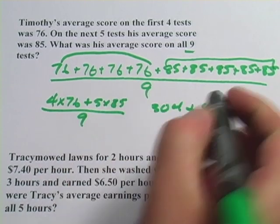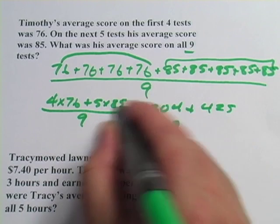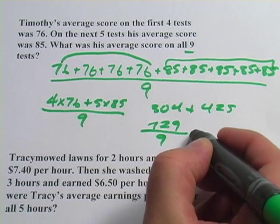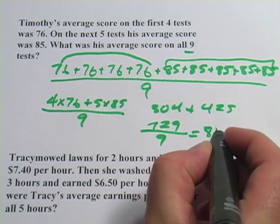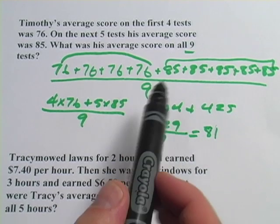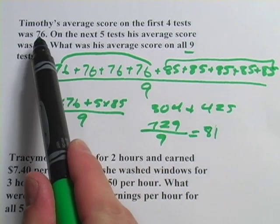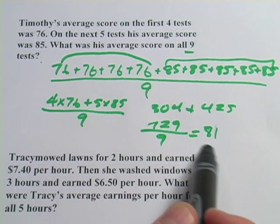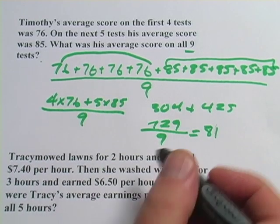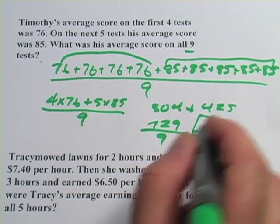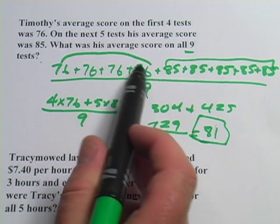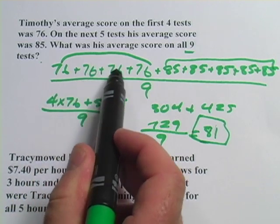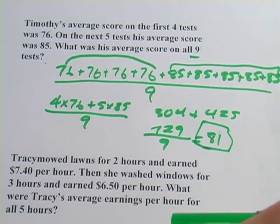Five times 85 is 425. When I add those together, I get 729 — that's what's on top of the fraction. On the bottom is nine. I do the division: 729 divided by nine, I get 81. I always want to look back at the problem and see if this makes sense. He got 76 on some tests and 85 on others, so the average should be somewhere in between. 81 is somewhere in between, so that looks reasonable. The shortcut here is: when you have chunks, just multiply by the number of items in the chunk.